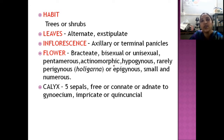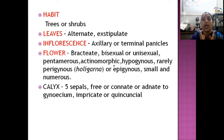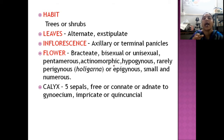Flowers are usually very small and occur in numerous clusters in panicles. The calyx has 5 sepals, which are free or connate at the base. Aestivation is quincuncial aestivation — two petals are completely out, two are partially in and out, and one is completely in.